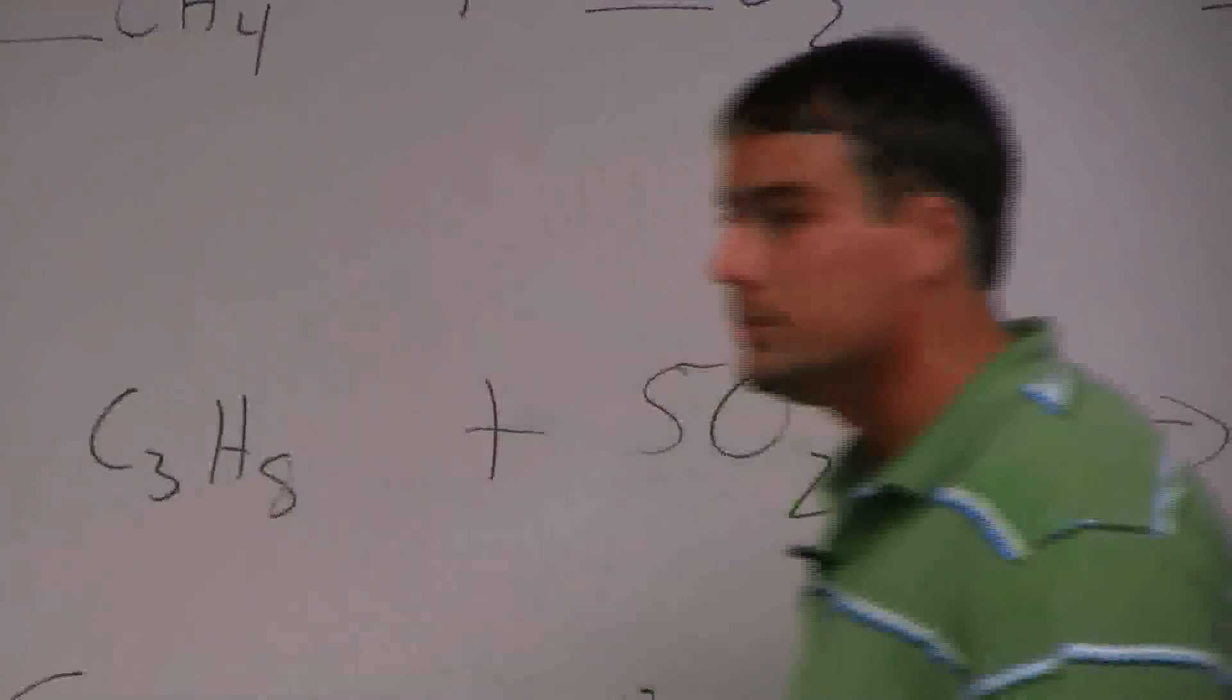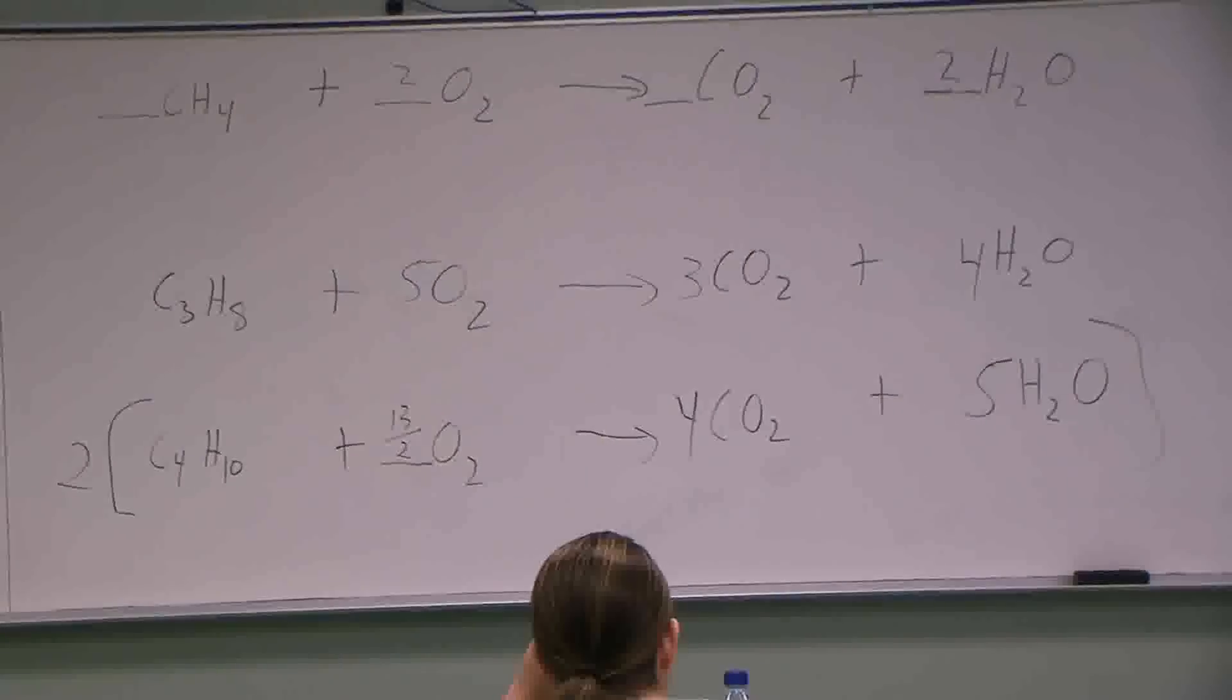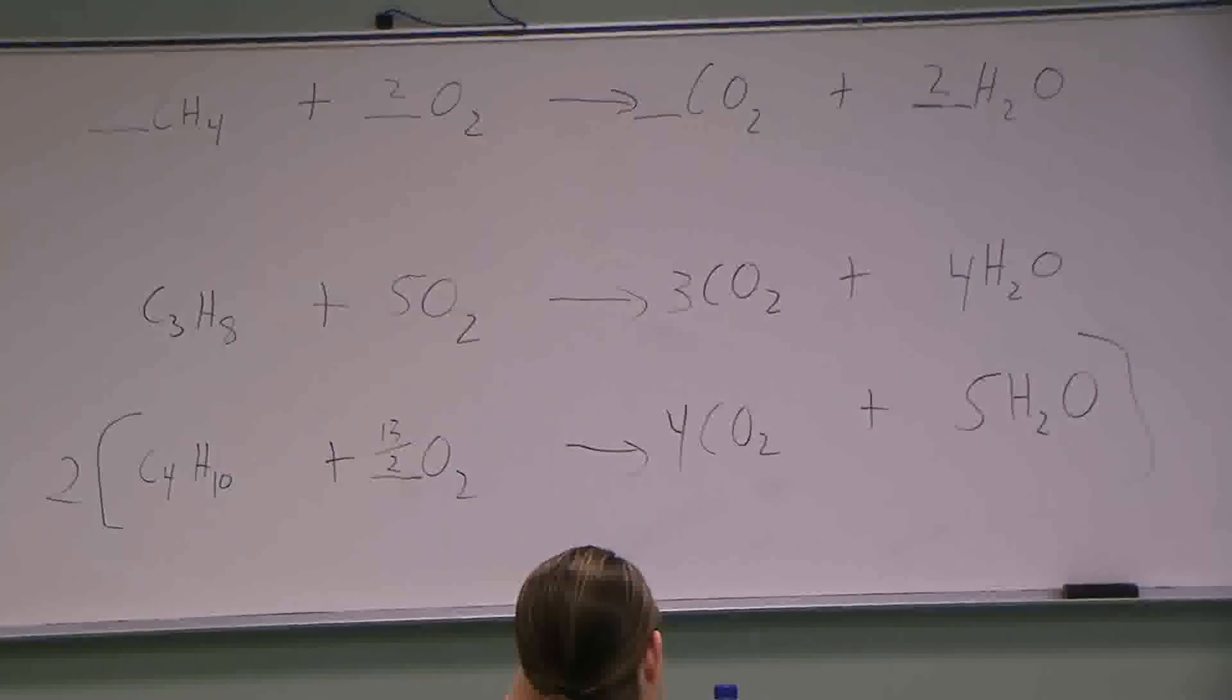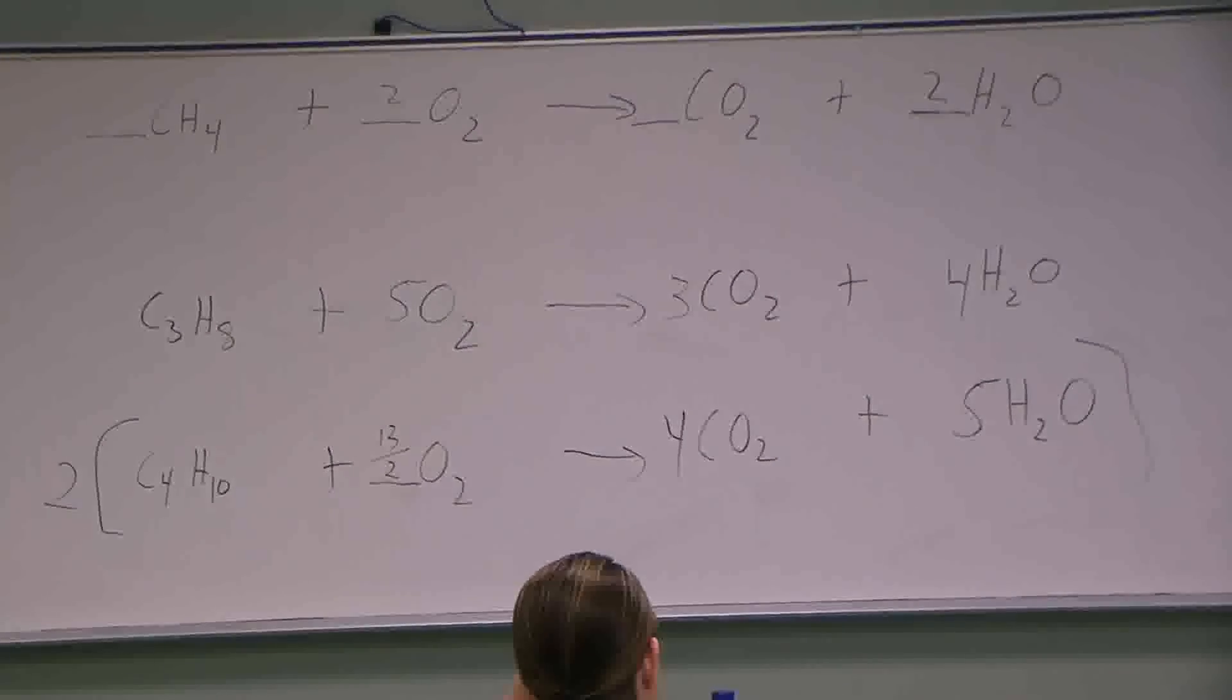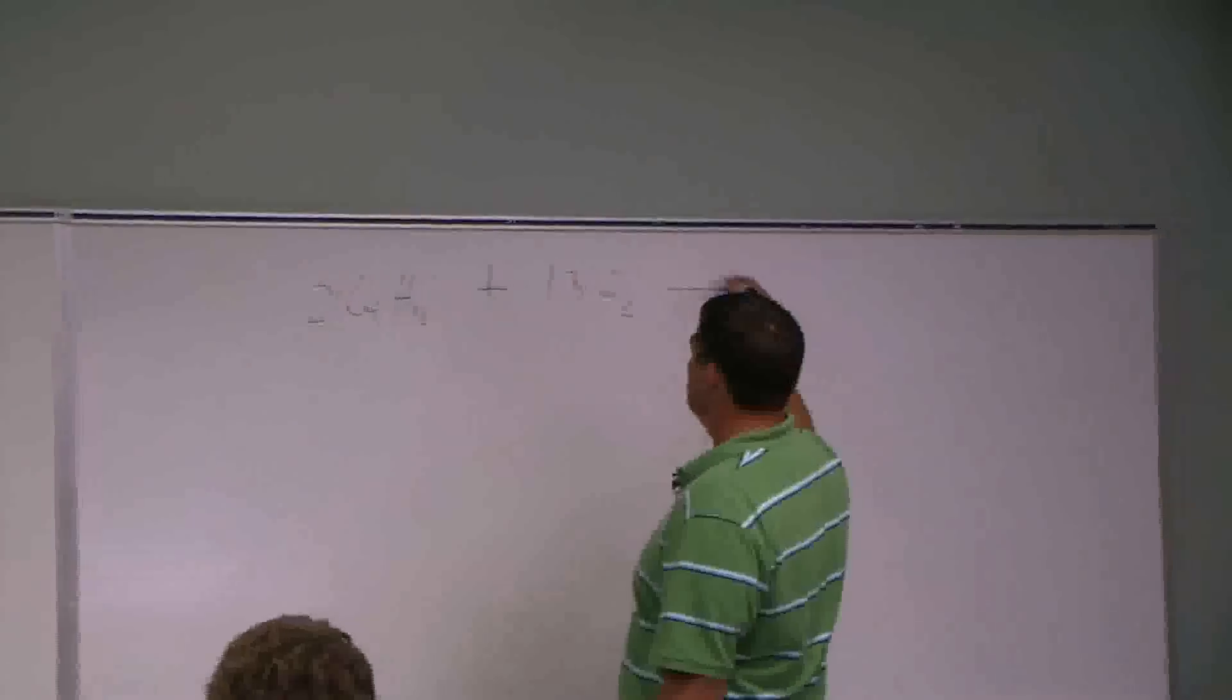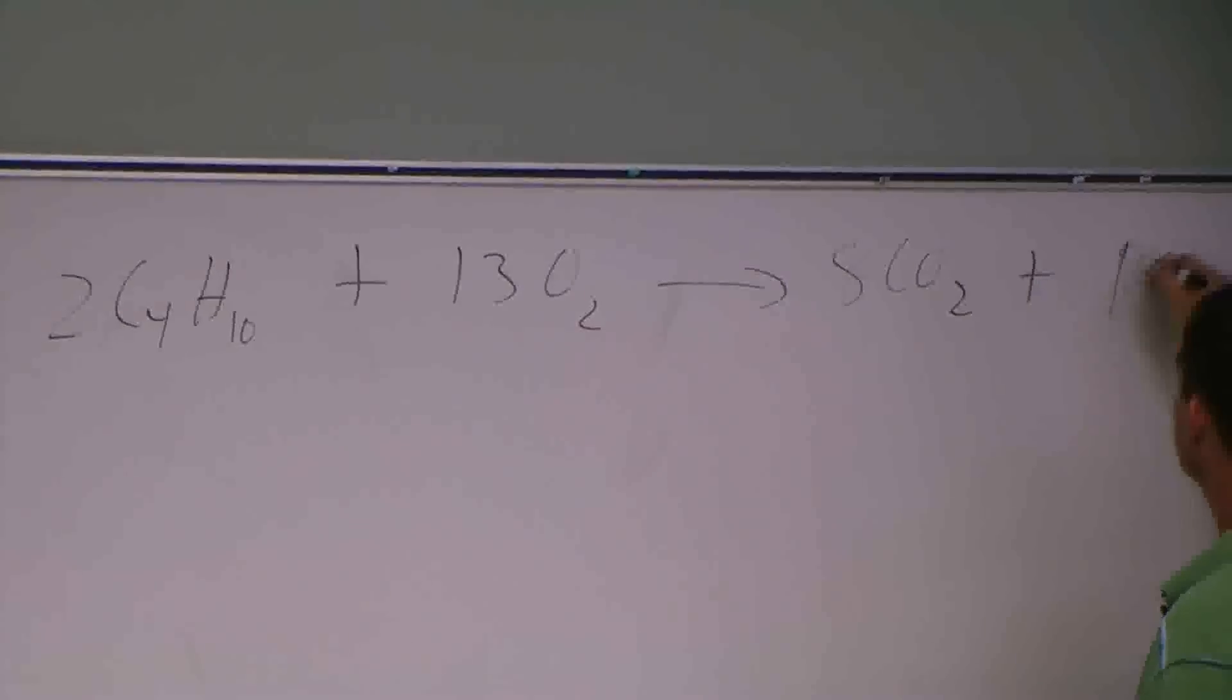You can divide an equation by anything. Well, chemistry is the same way. What can we multiply this by to get rid of that fraction? Two. You with me? Because if you've got 13 divided by two, if you multiply that joker by two, what you're going to get? Thirteen. No fraction. Let's see what happens when we do that. And we'll still be able to check ourselves. Two C4H10s plus 13 O2s yield eight CO2s plus 10 waters.